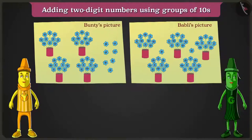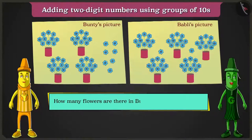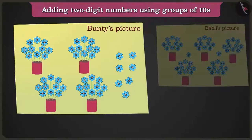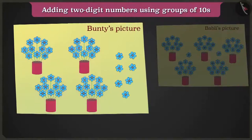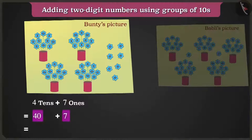Yellow, can you tell me, in Bunty and Bubbly's drawing, how many flowers are there in total? Let us count them. Bunty's drawing paper has one, two, three and four flower pots of ten flowers each, and one, two, three, four, five, six, seven loose flowers. In these, there are four tens that are forty and seven ones that are seven. Forty and seven in total, there are forty-seven flowers.